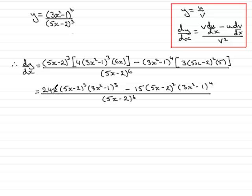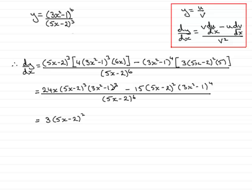The next stage is always to see if there are any common factors in these two terms, and if there are, to factorise. Looking across the two terms, 3 divides into both 15 and 24, so 3 is a common factor. We also have (5x minus 2) squared appearing in both terms, so that's also a common factor. And (3x squared minus 1) cubed fits into both terms as well, making it another common factor.